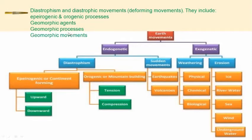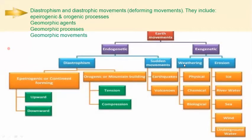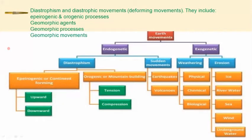Then we have the geomorphic process. These are the various physical, chemical, or biological processes that take place on the earth's surface due to endogenetic and exogenetic forces — for example, faulting, which is a physical process. These processes result in change in the earth's surface and are called geomorphic processes.